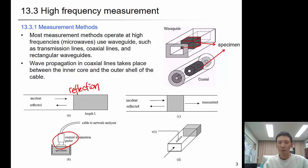Wave propagation in coaxial lines takes place between the inner core and the outer shell of the cable. When you have a material like this, an incident wave and a reflective wave, you're measuring the reflection coefficient, and this could be a complex number reflection coefficient. From this, we can estimate the kappa asterisk, the permittivity value.